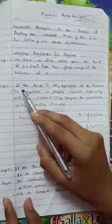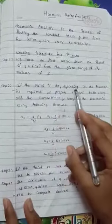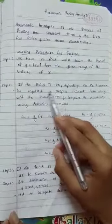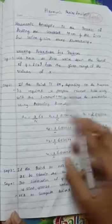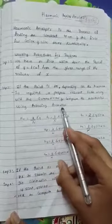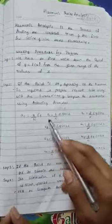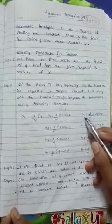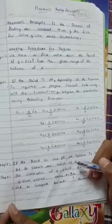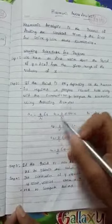Next, step 2: if the period is 2π, depending on the harmonics required, we prepare a relevant table along with the summations and compute the harmonics using the following formulas. We have formulas for a0, a1, a2, a3, an and so on, and b0, b1, b2, b3, and so on up to bn.